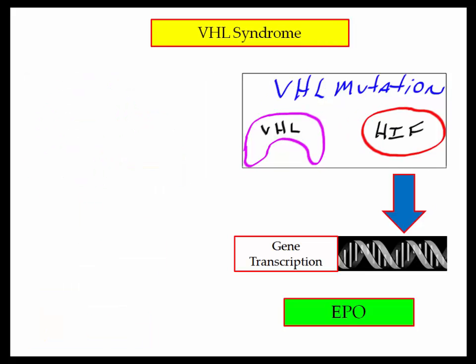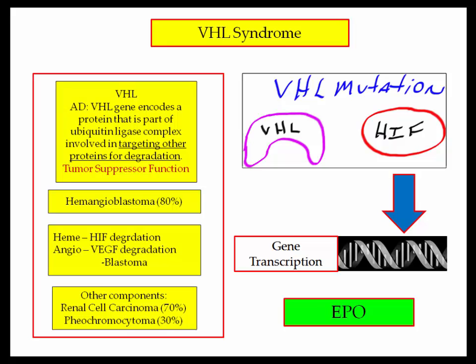So what do we have here? The VHL gene is supposed to target HIF degradation. When mutated, there is no degradation and HIF runs amok. The body behaves as though there is chronic hypoxia, at least from the red cell production point of view. This is the basis of erythrocytosis associated with hemangioblastoma. VHL encodes a protein involved in protein degradation; when mutated, there is loss of the suppressive function. The most common tumor associated with VHL is hemangioblastoma. 'Heme' implies loss of HIF degradation with increased erythropoietin production. 'Angio' implies loss of vascular endothelial growth factor degradation — VEGF. So in hemangioblastoma, you have erythrocytosis and increased angiogenesis.